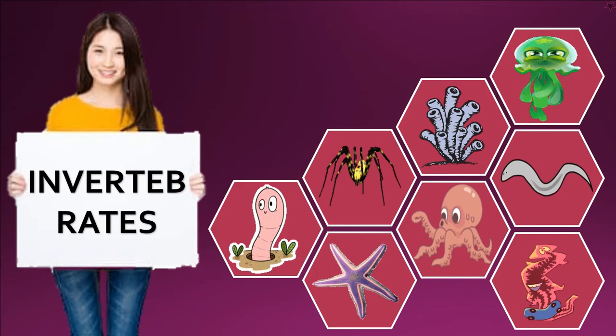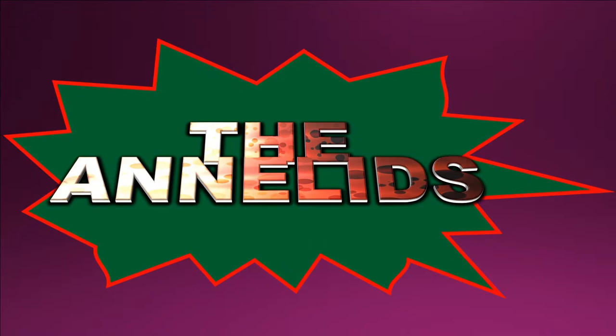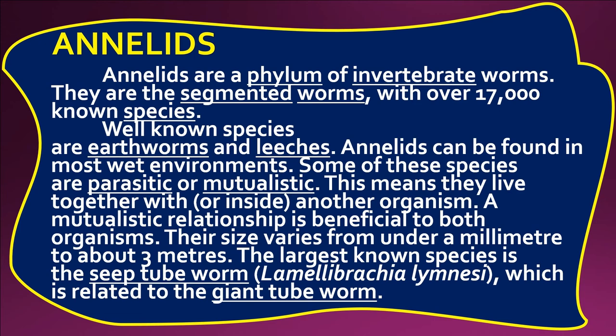The Annelids. Annelids are a phylum of invertebrate worms. They are the segmented worms, with over 17,000 known species. Well-known species are earthworms and leeches. Annelids can be found in most wet environments. Some of these species are parasitic or mutualistic — meaning they live together with, or inside, another organism.